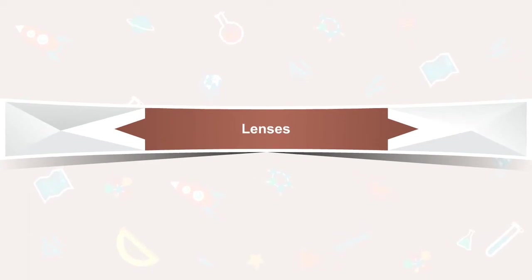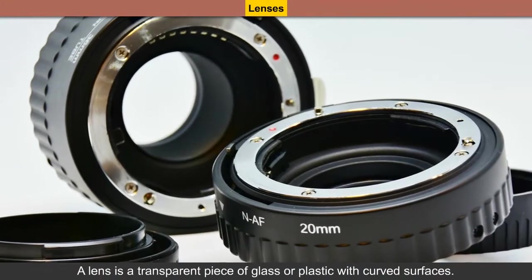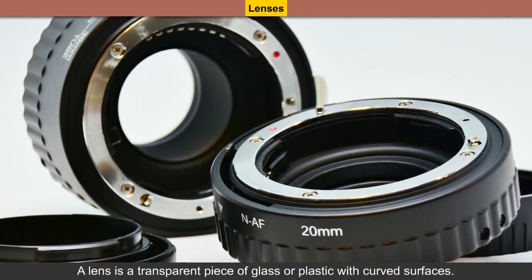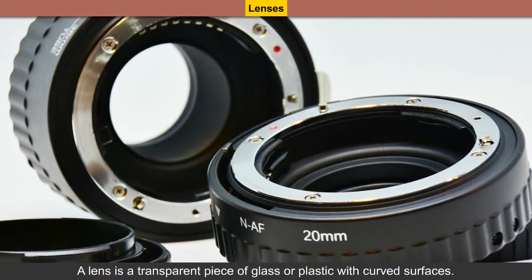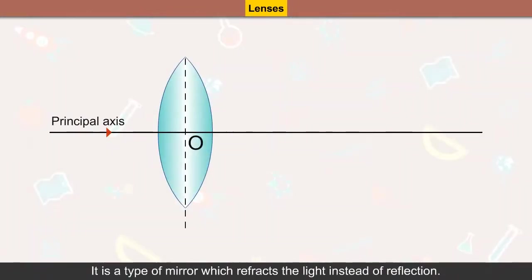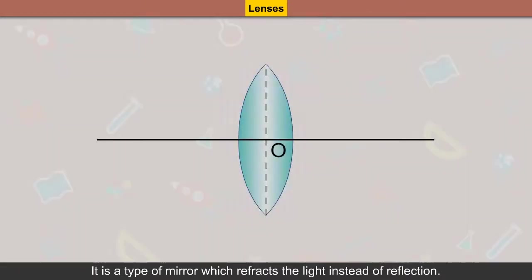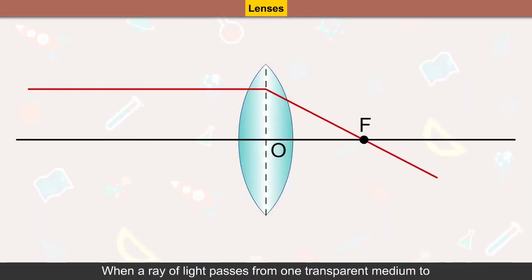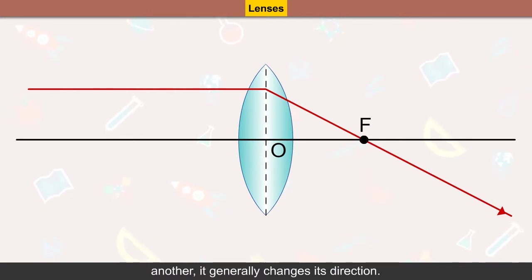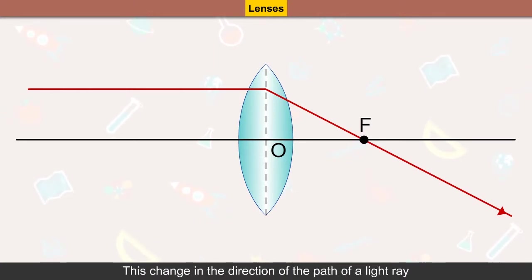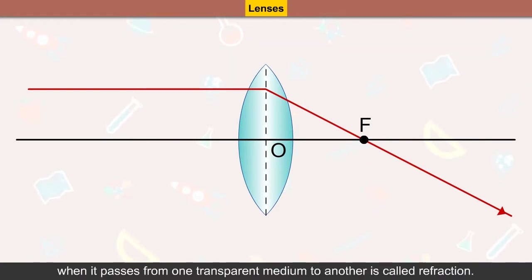Lenses: a lens is a transparent piece of glass or plastic with curved surfaces. It refracts light instead of reflecting it. When a ray of light passes from one transparent medium to another, it generally changes its direction. This change in direction of the path of a light ray when it passes from one transparent medium to another is called refraction.